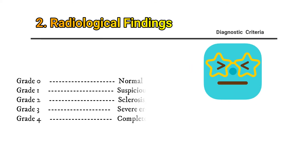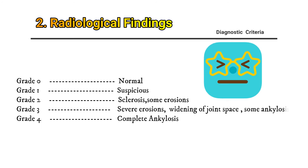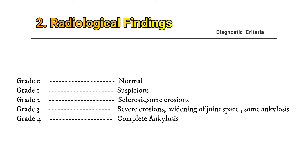Grade 0: Normal. Grade 1: Suspicious. Grade 2: Sclerosis. Grade 3: Severe erosions, widening of joint space, some ankylosis. Grade 4: Complete ankylosis.